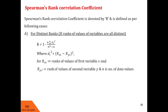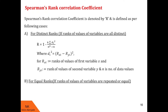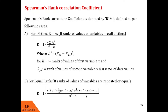In Case 2, we discuss the rank correlation coefficient if the ranks of the values of the variable are all not distinct — in fact, some of them are repeated or equal. In that case, R is given by 1 minus 6 into summation di-square plus 1/12 into (m1-cube minus m1) plus 1/12 (m2-cube minus m2) and so on, whole divided by n-cube minus n. Here n means number of data values, di-square stands for Rxi minus Ryi whole square, and Mi denotes the number of values having equal or repeated ranks.